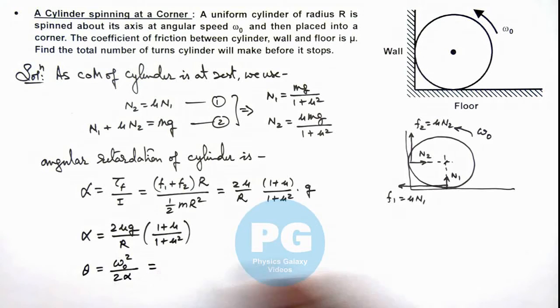So here omega not we are provided and alpha we have calculated, so this gives us omega not squared by 2 alpha will be multiplied by r times 1 plus mu squared divided by 4 mu g multiplied by 1 plus mu.